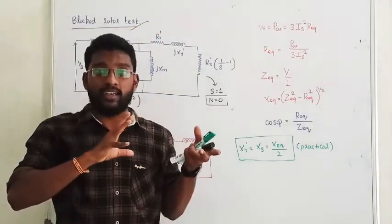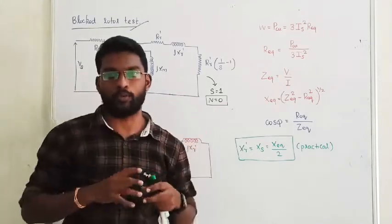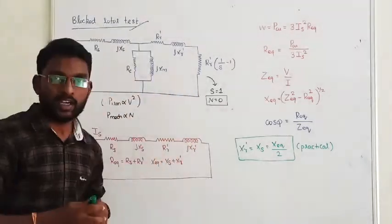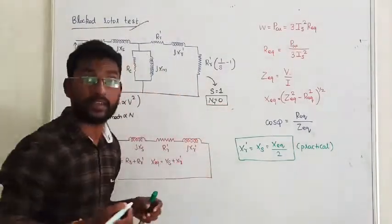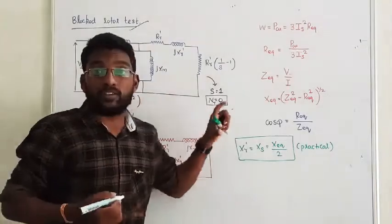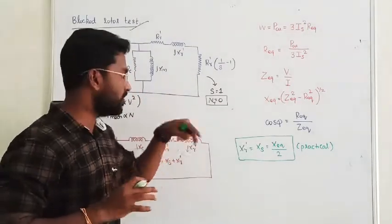In induction machine, the induction motor rotor, rotor is blocked. That is called short circuit test. Blocking in the sense, we are going to make the value of rotor speed as zero. Rotor speed zero, that is called blocking. We are blocking the rotor to stop, that is to rotate.